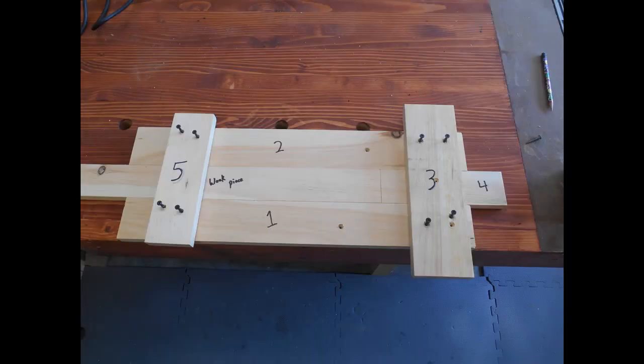Now I've got the jig laid out and I've numbered the parts so you'll know what I'm talking about when I reference it. The guides are pieces one and two. Number three is going to be the fence. Number four is going to be your stop. And number five is just a cross brace that holds all that together. And of course I've got a work piece in the middle of it to size it all up.